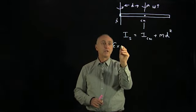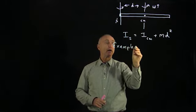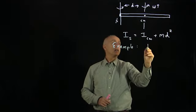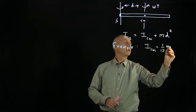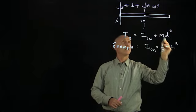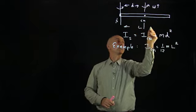For example, we know that for a rod of length L, that the moment of inertia through the center of mass was 1/12 mL². So we have a length L.